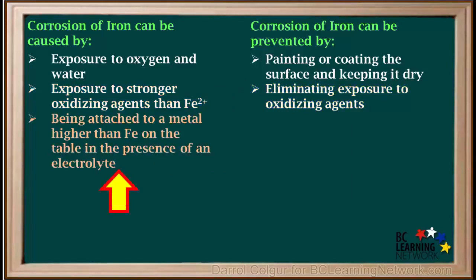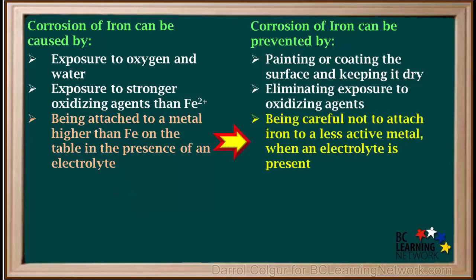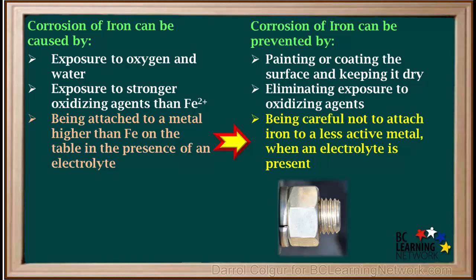Another potential problem is galvanic corrosion. This is where iron or steel is attached to a metal higher than iron on the reduction table, or a less active metal in the presence of an electrolyte. We must be careful not to attach iron or steel to a less active metal, such as an alloy containing copper, when an electrolyte is present. For example, we must pay attention to what type of bolts or fasteners we use when building steel structures.